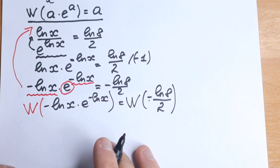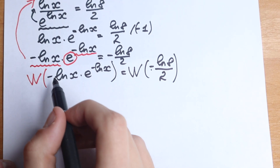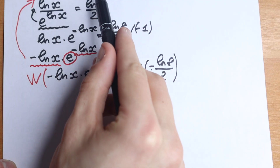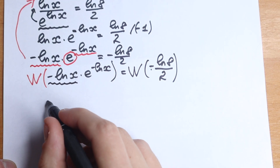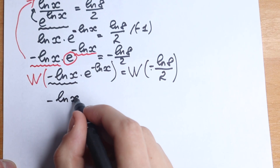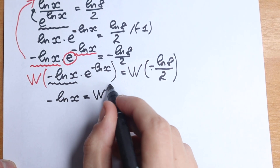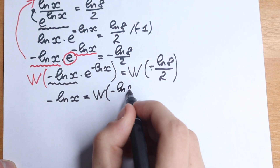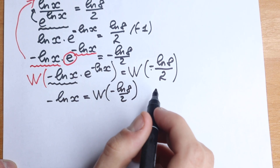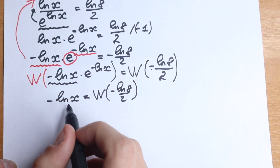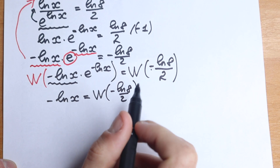The Lambert W function on the left gives us only a, which in our case is minus natural log x. So we have: minus natural log x equal to W of minus natural log 8 over 2. We have simplified greatly — now we have just natural log x isolated on the left and a constant on the right.